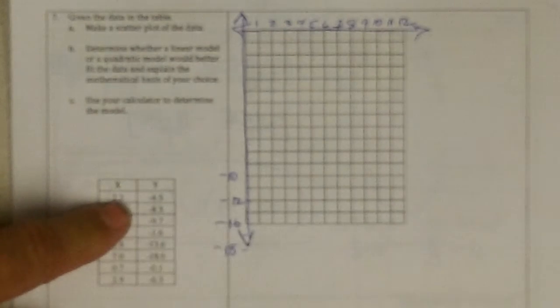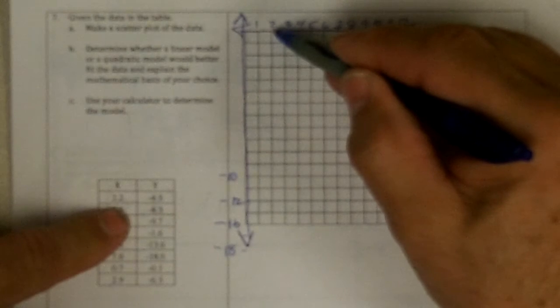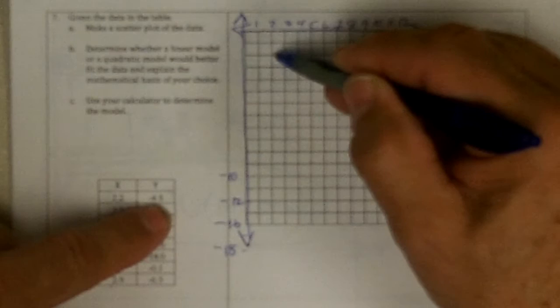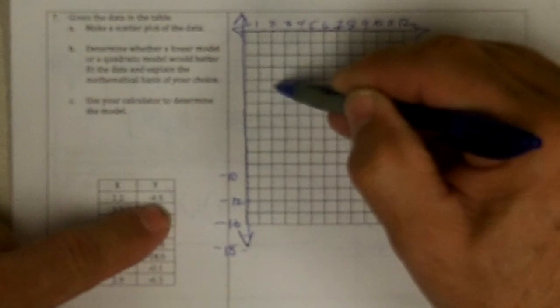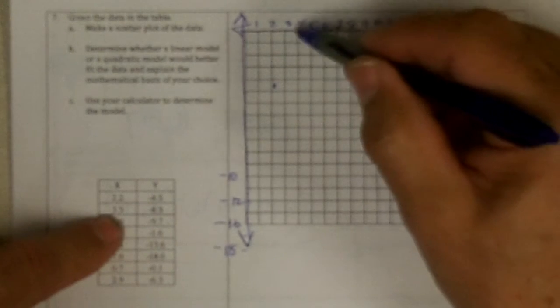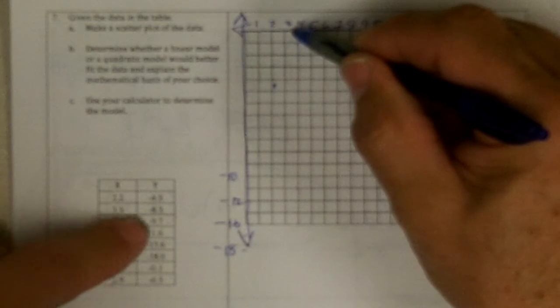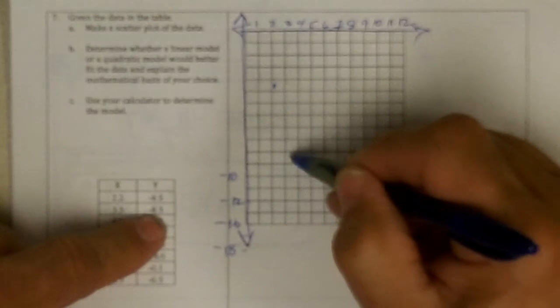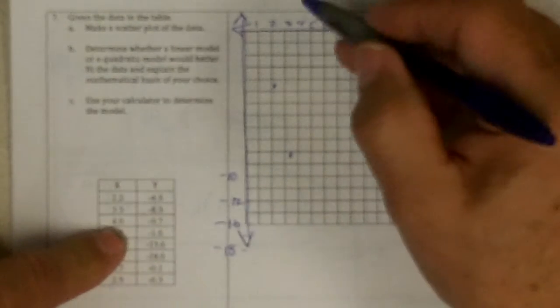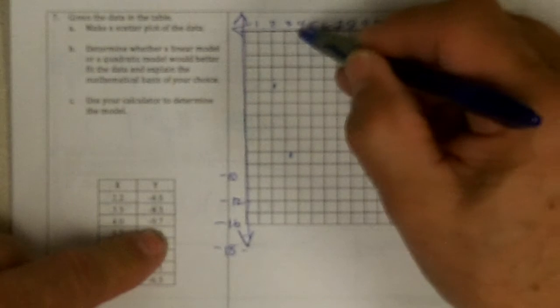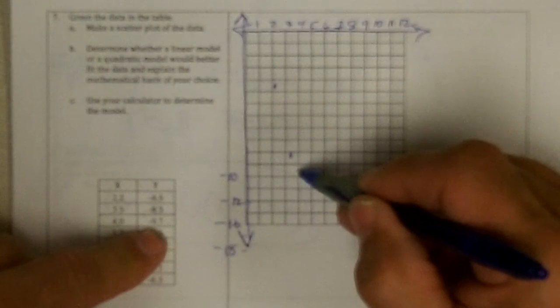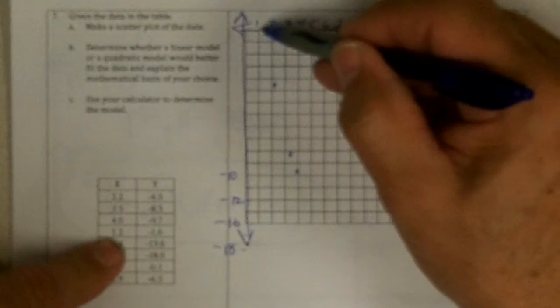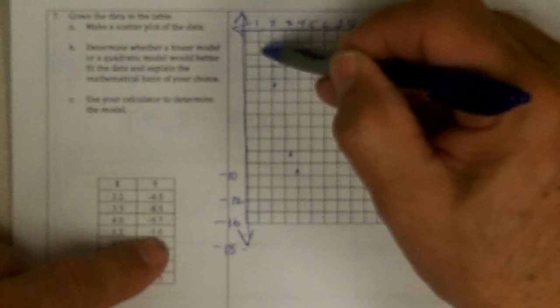So now I can graph it. 2.2, negative 1. 2, 3, 4.5. 3.5, negative 8.3. 4.0, negative 9.7. 1.2, negative 1.6.